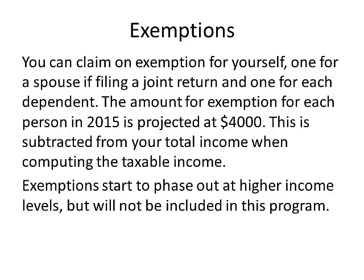What are exemptions? You can claim an exemption for yourself, one for a spouse filing a joint return, and one for each dependent. The amount for each exemption for 2015 is projected at $4,000 per person, and this is subtracted from your total income when computing the taxable income. Exemptions start to phase out at higher income levels, but that's not included in this program.